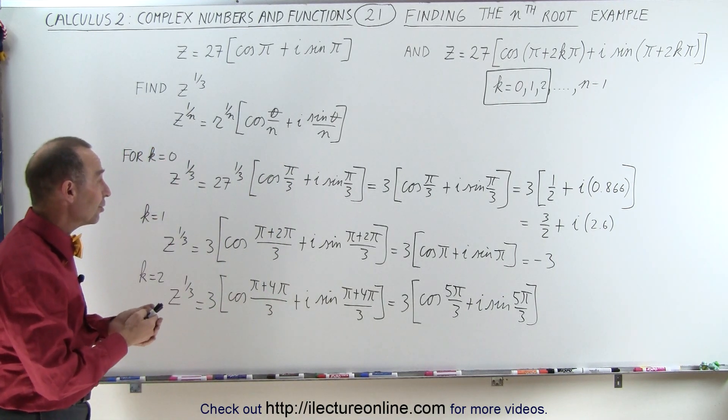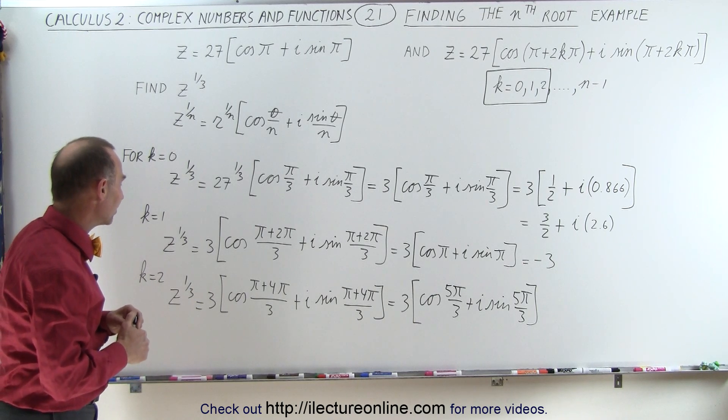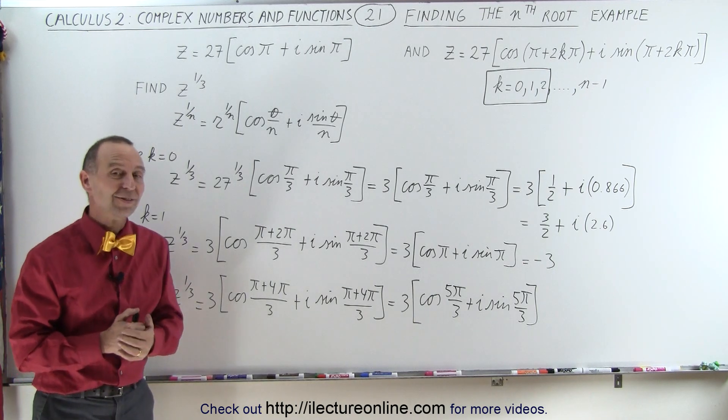So notice that you need to do this 3 times, because there are 3 possible ways in which you can express the value of z, and that's how it's done.